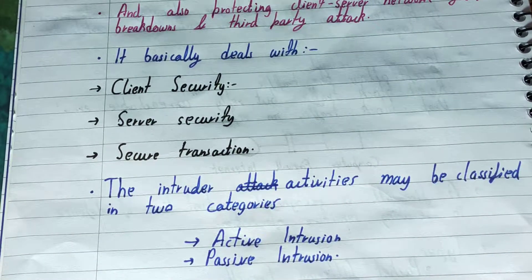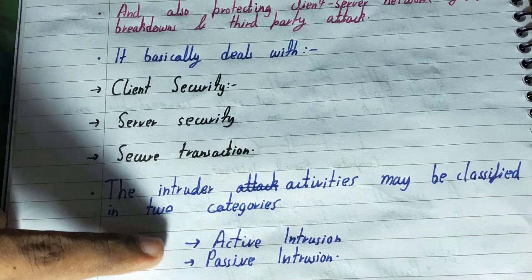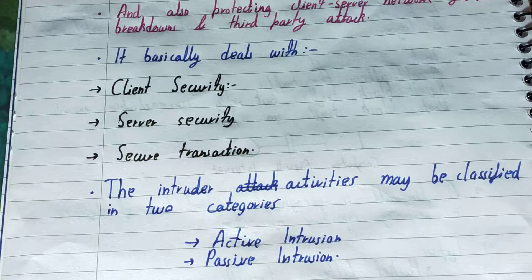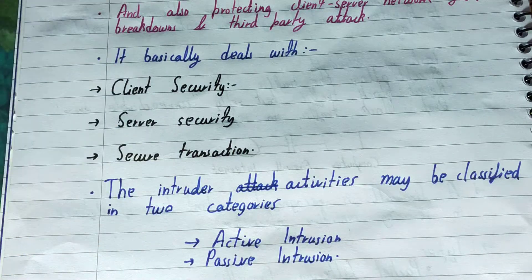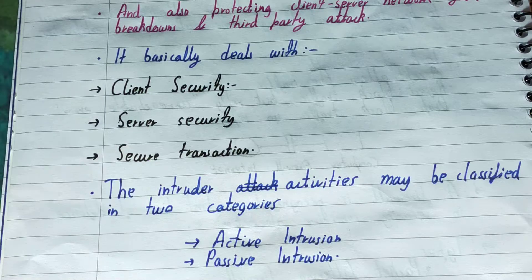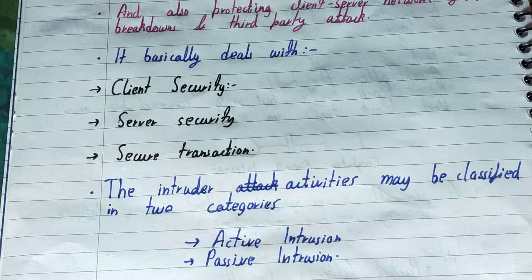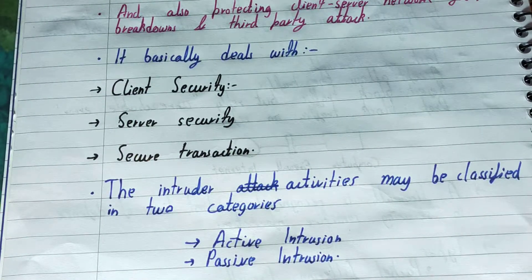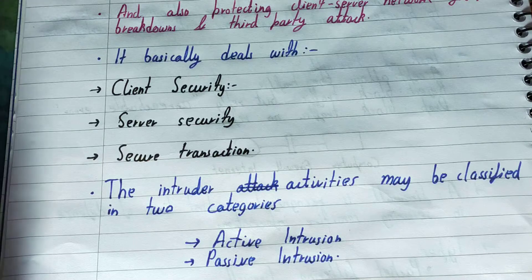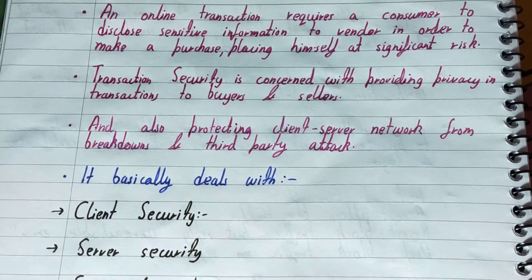Intruder activities may be classified into two types: active intrusion and passive intrusion. In active intrusion, modification of information takes place. In passive intrusion, only reading or listening to the information takes place — no modification occurs. Because no modification takes place, passive intrusion is more dangerous and harder to detect compared to active intrusion.